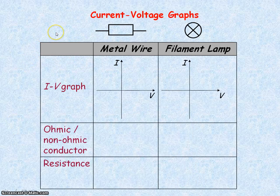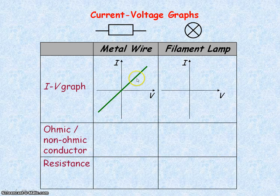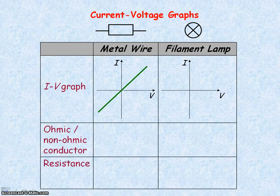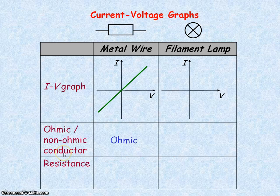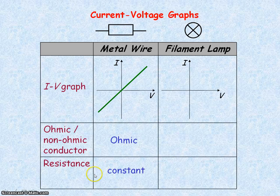We're now going to look at current voltage graphs, first for a metal wire or a resistor. The graph looks like a straight line through the origin. The negative voltage and current is when the battery connections have been reversed. The straight line through the origin tells us that the voltage is directly proportional to the current. So the metal wire or a fixed resistor obeys Ohm's law — it's an ohmic conductor, and its resistance is constant.